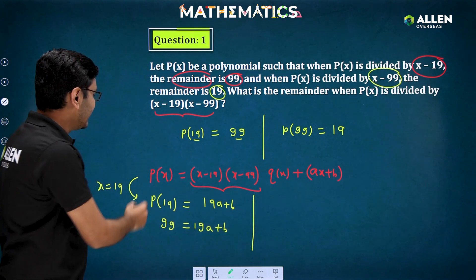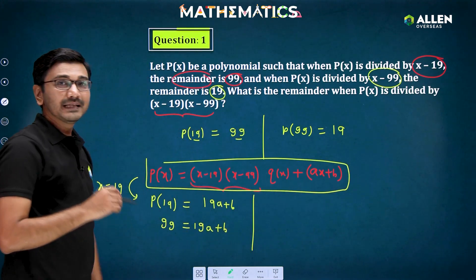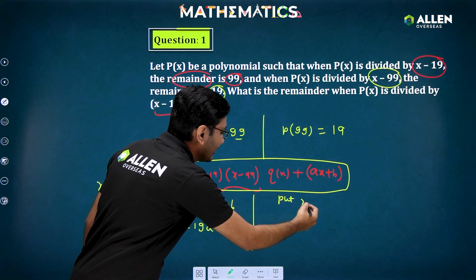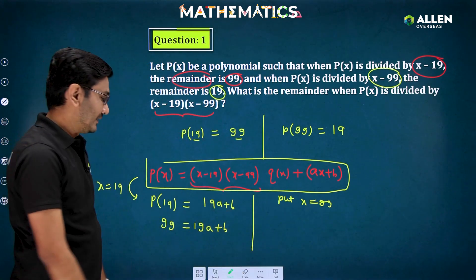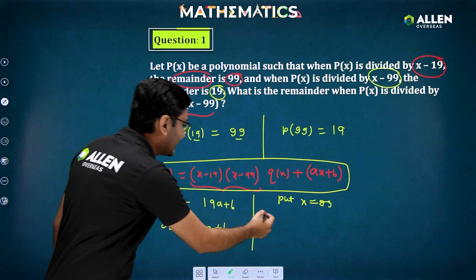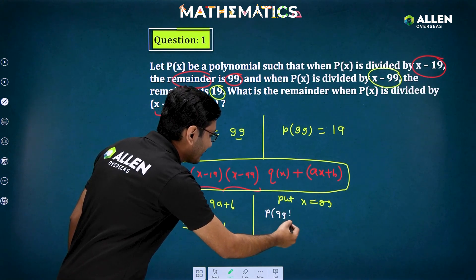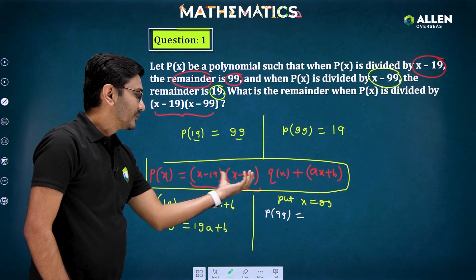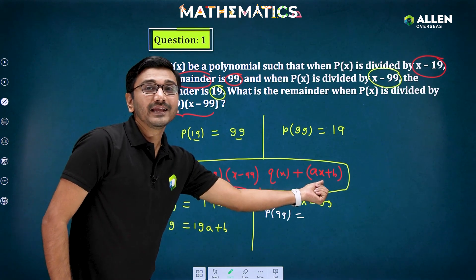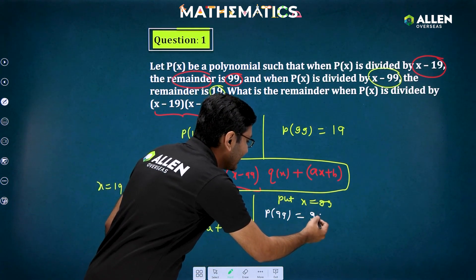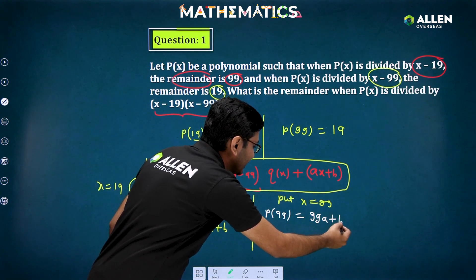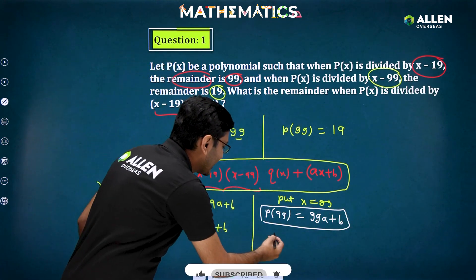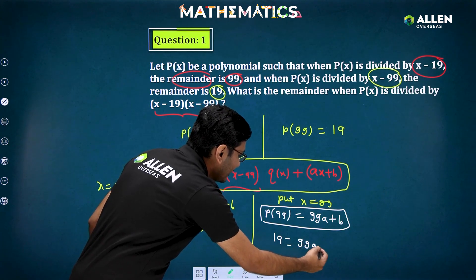Similarly, putting x = 99 in the complete equation, the term (99 minus 19)(99 minus 99) goes to 0, and we get p(99) = 99a + b. Since p(99) = 19, we get the second equation: 99a + b = 19.